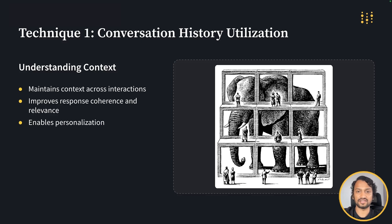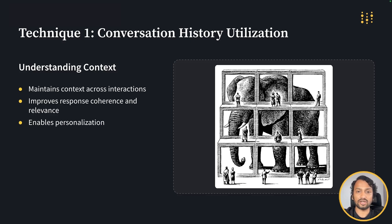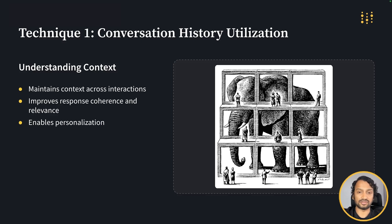Utilizing conversation history is like giving your system the ability to remember parts of the conversation. It helps maintain context across multiple interactions, making responses more coherent and relevant. In OneBot, we use this technique through chat history condensation and contextual query reformulation. When a user asks a follow-up question about logging metrics, OneBot can look back at previous interactions and remember that the user was asking about logging metrics with PyTorch specifically, allowing it to respond in a more targeted way. By utilizing conversation history, you're giving your RAG system a better memory, leading to more natural and conversational interactions.